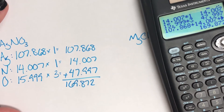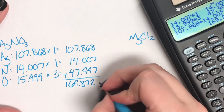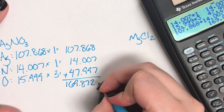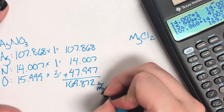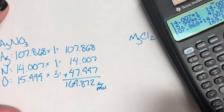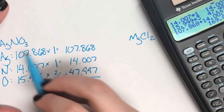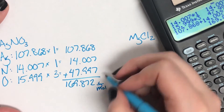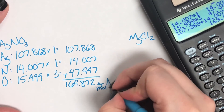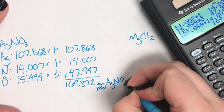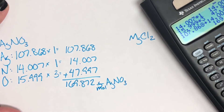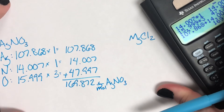That number needs a unit. It's going to get the unit for molar mass, which is always grams per mole, along with our formula — AgNO3, silver nitrate.